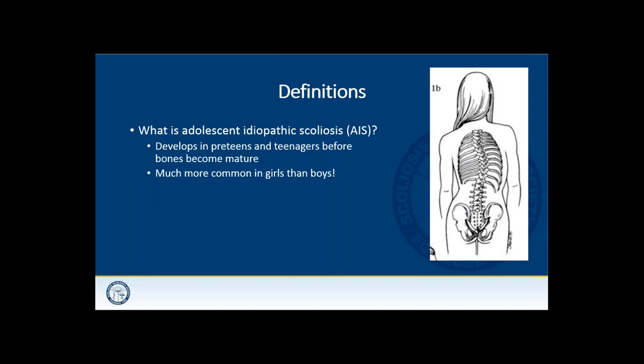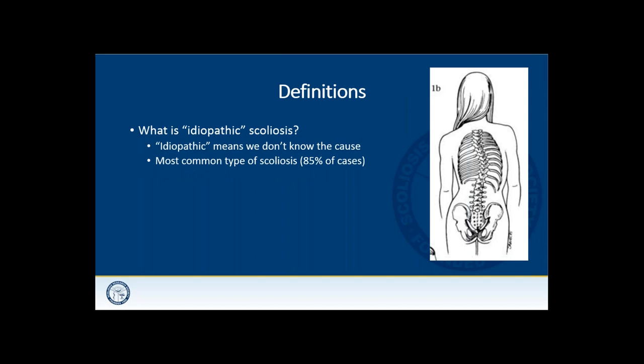What is adolescent idiopathic scoliosis? The term 'adolescent' means in the teenage population — typically preteens and teenagers before the bones become mature — and it's much more common in girls than boys. This is by far the most common condition of scoliosis that we see as treating physicians. 'Idiopathic' technically means we don't really know the cause. Many patients ask how they got scoliosis when nobody in their family has it. These conditions do sometimes run in families, but the vast majority of patients are de novo, with no prior family history — representing 85% of cases.